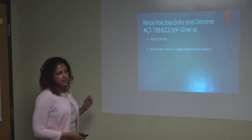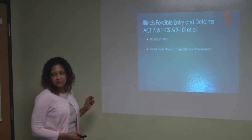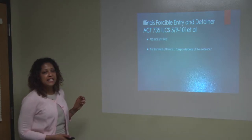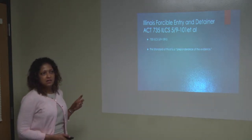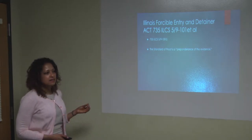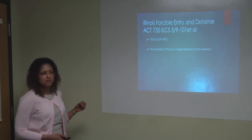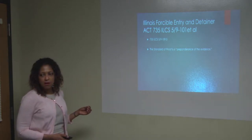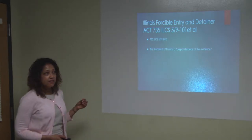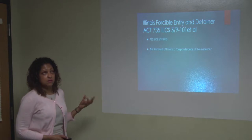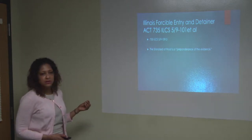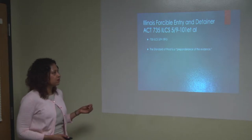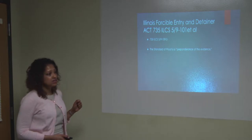The standard of proof in a forcible case is a preponderance of the evidence. For example, if someone claims a breach of warranty of habitability, meaning something is wrong with the unit, there has to be proof. It can't just be 'I don't like the color of the paint.' It has to be something like: 'I have a leak that has turned into mold and is causing respiratory issues,' with reports and proof to substantiate the claim.